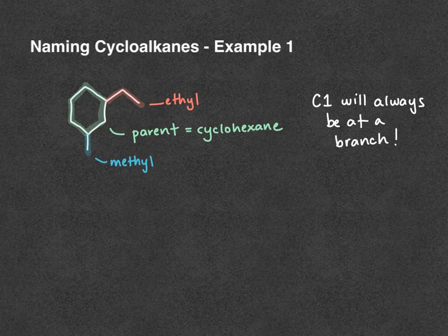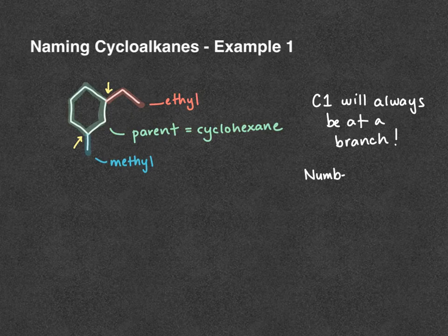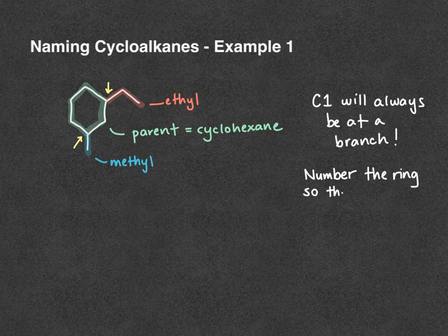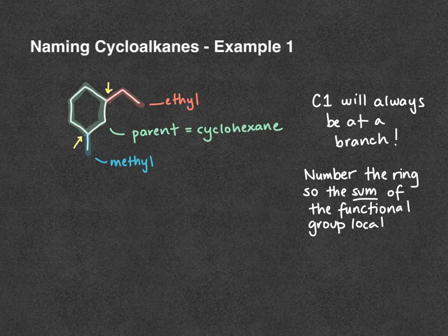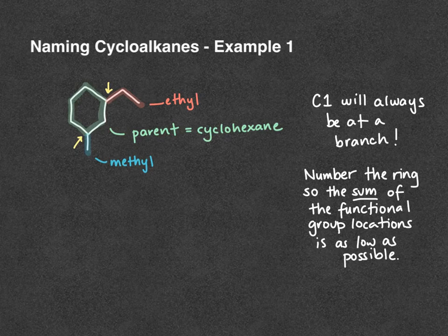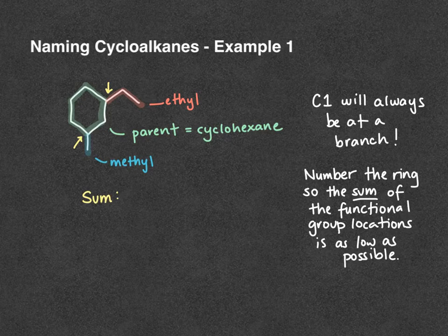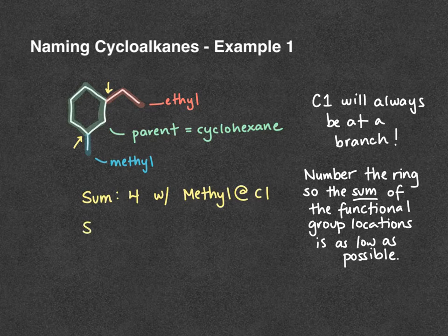We have two options: we can make carbon one our ethyl carbon or our methyl carbon. The second thing to consider is that we're going to number the ring so that our functional groups have the lowest possible sum when their locations are added together. If we number with methyl at carbon one, our sum is one plus three, which equals four. With ethyl at carbon one our sum is also four.